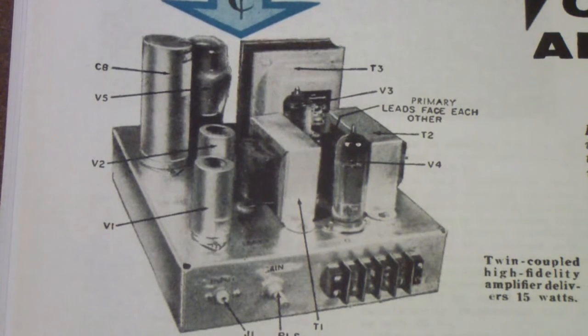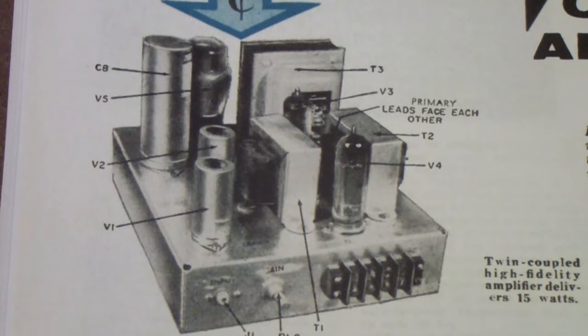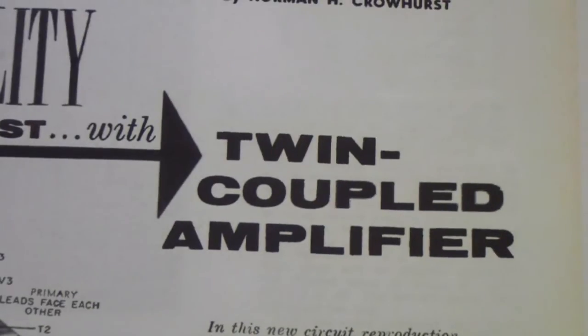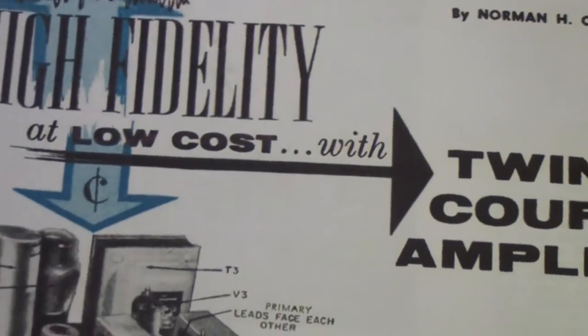When I began this series on hi-fi tube amplifiers, I intended to stop after the Williamson and cathode loading amplifiers, including the ultralinear. But someone asked a question about why I never talked about the amplifier I began the whole series with—the Radio Electronics twin-coupled amplifier that appeared in this article.